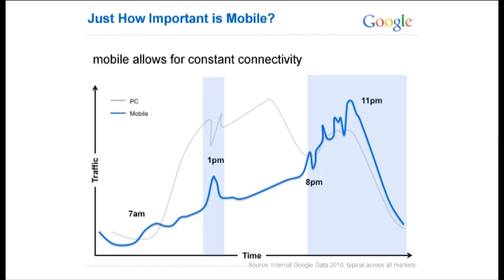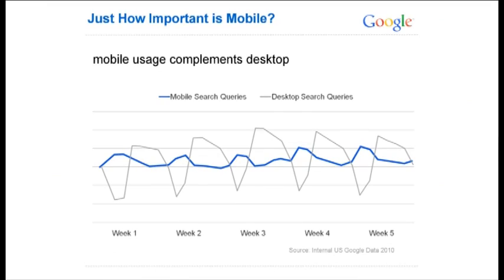Another interesting data point is mobile allows for constant connectivity. For an average user on an average day, you can see around lunchtime when people leave the office, desktop usage dips — that's when mobile picks up. Later in the evening around 6pm, desktop usage again drops off and mobile actually rises, surpassing desktop usage in the late hours of the night. Mobile usage also complements desktop, with high or constant mobile usage and spikes wherever desktop drops.